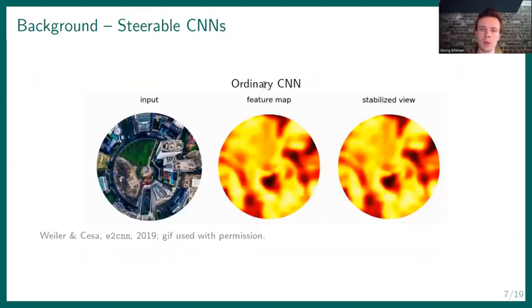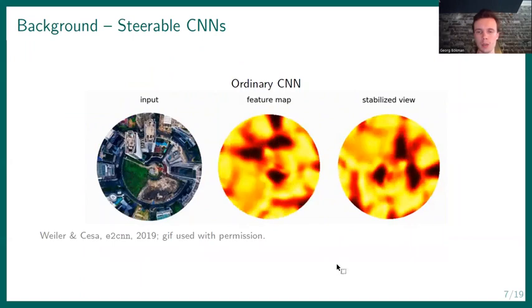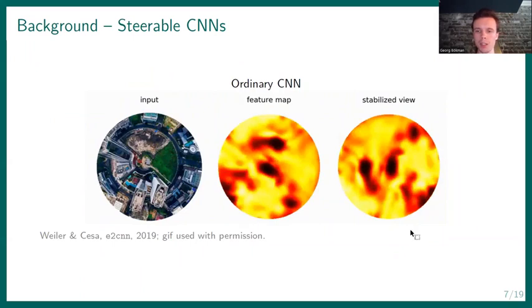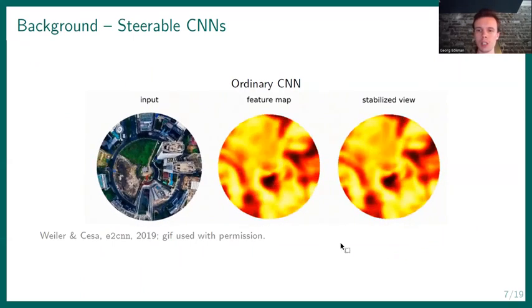Well, LoFTR uses an ordinary CNN in the backbone and when we rotate an input image, then the feature maps in an ordinary CNN can change in an arbitrary way. So in the stabilized view here, you see the feature map rotated back to the original orientation of the image and you see that it changes arbitrarily.